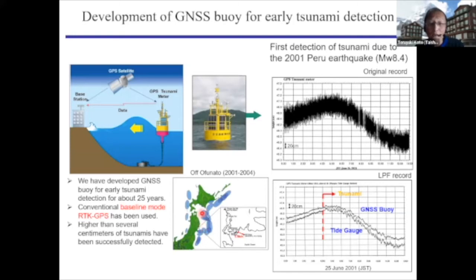As you know, this part is very famous as a place frequently attacked by tsunamis, and the most famous one is, of course, the 2011 Tohoku tsunami. But before that large earthquake, we began to install GNSS buoy data for experiment. This is the buoy that was used for detecting tsunami at that time.